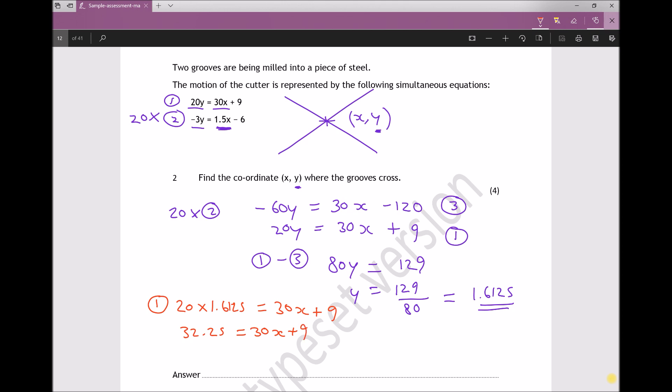Now what I'm trying to do is get x on its own. So the next thing that I need to do to each side of the equation is subtract 9 from each side. Subtracting 9 from the left-hand side leaves me with 23.25, and subtracting 9 from the right-hand side just leaves me with 30x. So rewriting that, 30x equals 23.25. Now all that's left to do is divide each side by 30, so I get x equals 23.25 over 30, which equals 0.775.